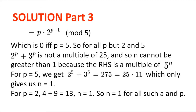For p equals 5, we get 2 to the power of 5 plus 3 to the power of 5 equals 275, which is 25 multiplied by 11, giving only n equals 1 since 25 is a perfect square and 11 is not a perfect power. Similarly, for p equals 2 we get 4 plus 9 equals 13, and again n equals 1 is the only solution. So we have proven that for all such a and p, n must equal 1.